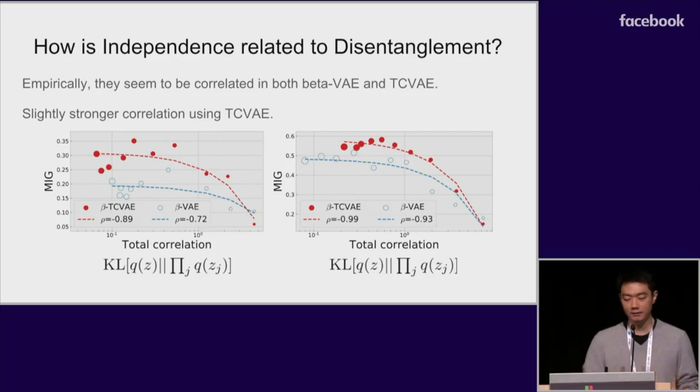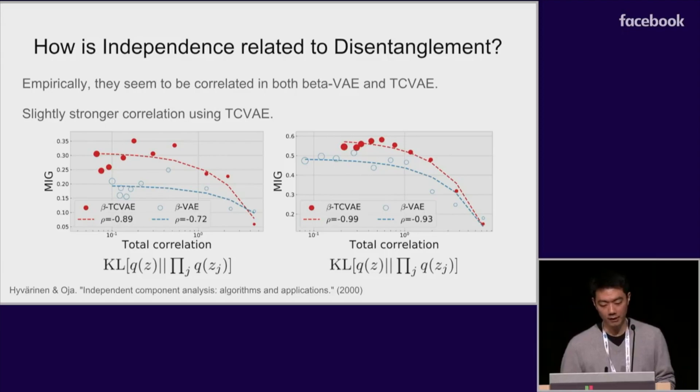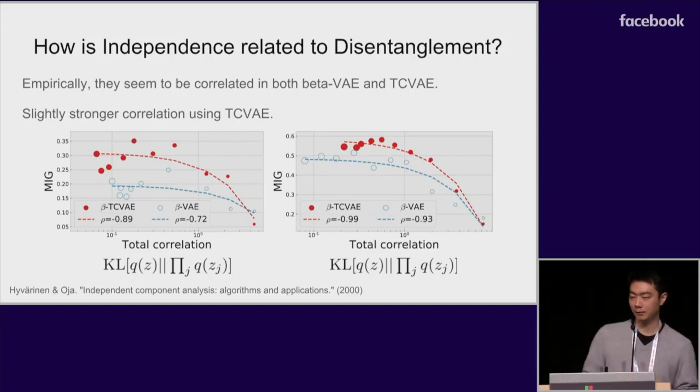So as previously mentioned, the TCVAE algorithm learns factorized representations, but does independence between latent factors lead to representations that correspond to these ground truth factors? Here we show the relationship between total correlation and our disentanglement metric, and we find empirically that both beta VAE and TCVAE, there's correlation between independence and disentanglements. It's interesting to see this relationship quantitatively. In this case, factorized representations recovered ground truth factors. This was one of the main motivations behind independent component analysis, which was a hot topic back before deep learning took the spotlight.